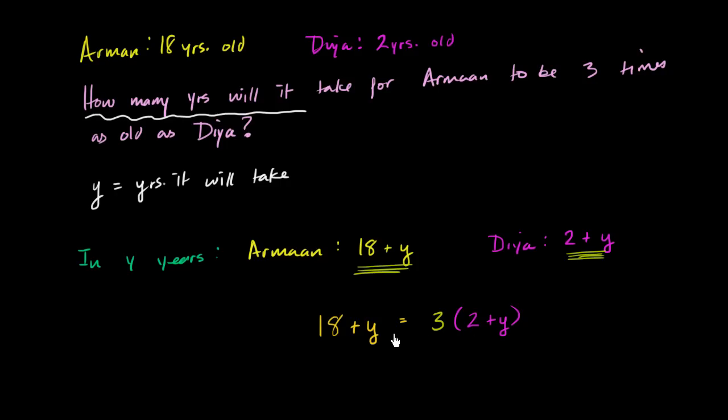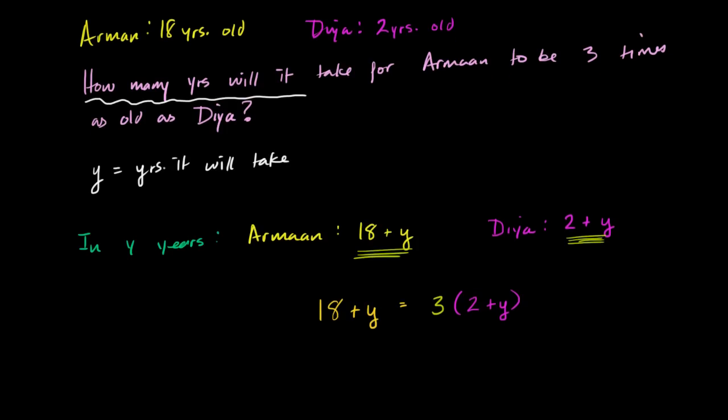Now we can just solve it. So let's take this step by step. So on the left-hand side, and maybe I'll do this in a new color just so I don't have to keep switching. So on the left-hand side, I still have 18 plus y. And on the right-hand side, I can distribute this three. So three times two is six. Three times y is three y. Six plus three y.